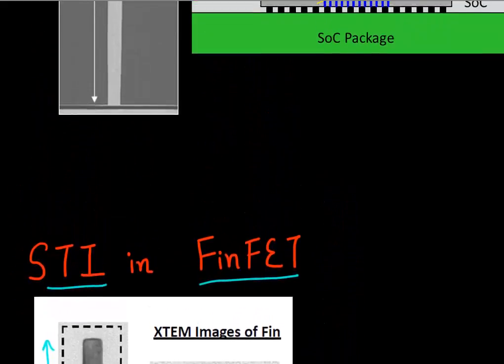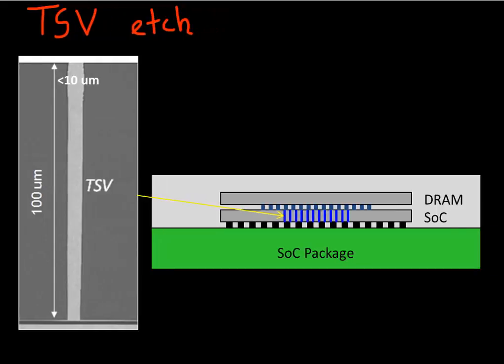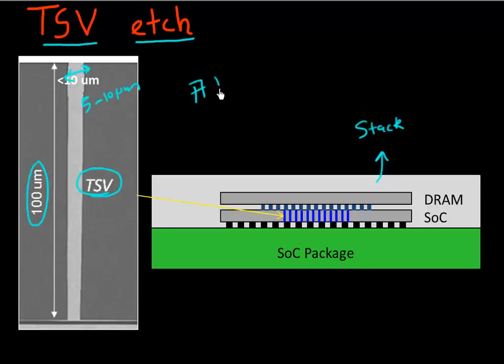Even bigger aspect ratios appear when we talk about packaging and through-silicon via technology used to connect and stack different chips. You have a DRAM or microprocessor chip stacked on top of each other, achieved by electrical contacts which are through-silicon vias. These etches are anywhere between 100 to 200 microns deep and you require them to be 5 to 10 microns wide, so aspect ratios of anywhere between 20 or even higher.